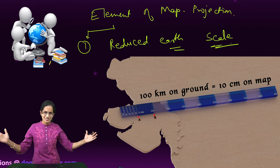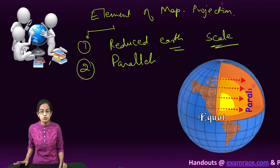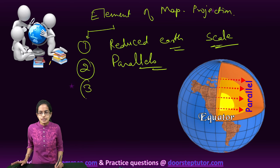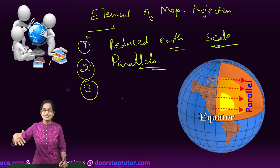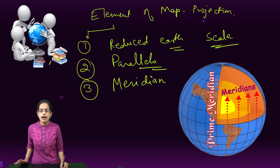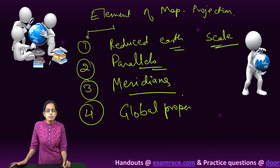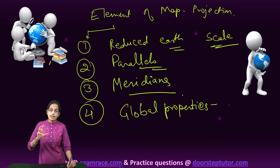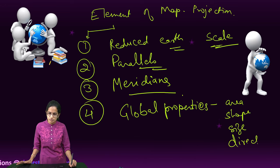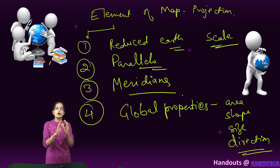Reducing earth is one of the most important elements. The next important element is the parallels or latitudes — how those would be defined. The third is meridians or longitudes, since a map would be incomplete without them. The fourth and most important is the global properties: trying to best maintain the area, shape, size, and direction when representing the globe on a sheet of paper.